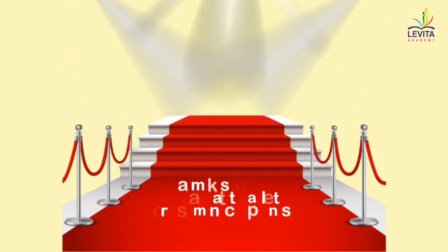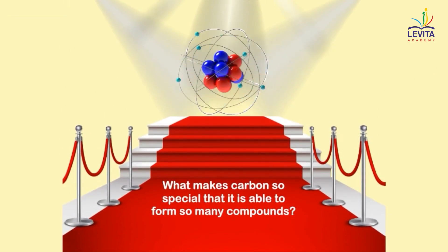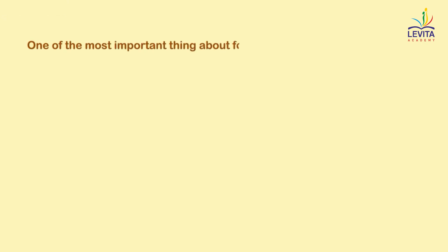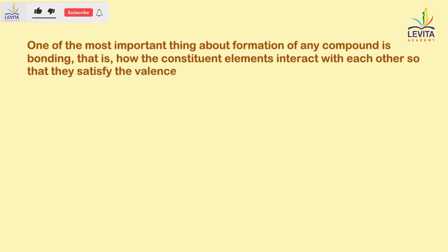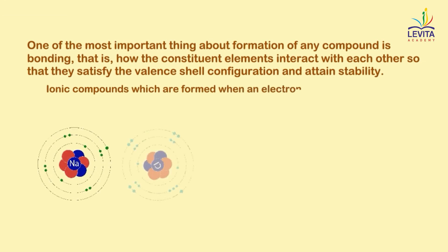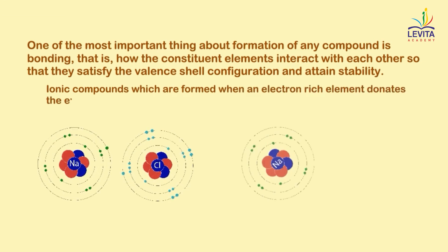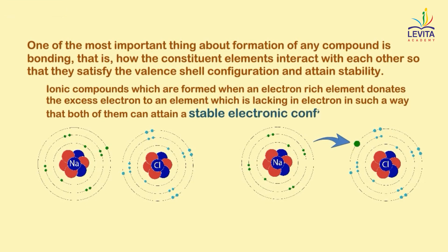So what makes carbon so special that it is able to form so many compounds? One of the most important things about the formation of any compound is bonding — that is, how the constituent elements interact with each other so that they satisfy the valence shell configuration and attain stability. In our previous videos, we have already learnt about ionic compounds, which are formed when an electron-rich element donates the excess electron to an element which is lacking in electrons, in such a way that both of them can attain a stable electronic configuration.